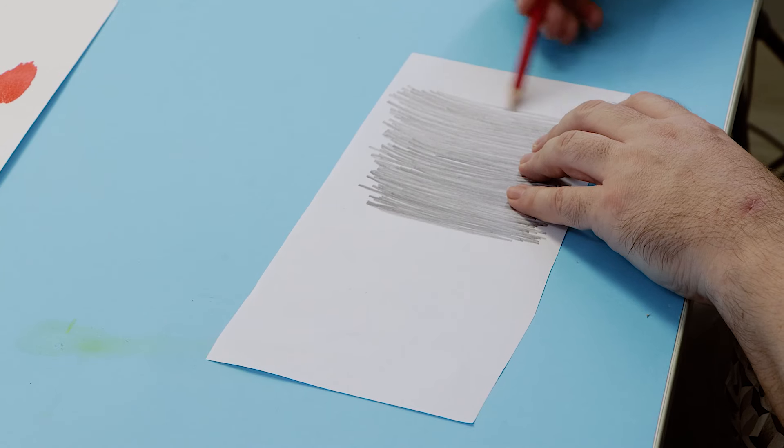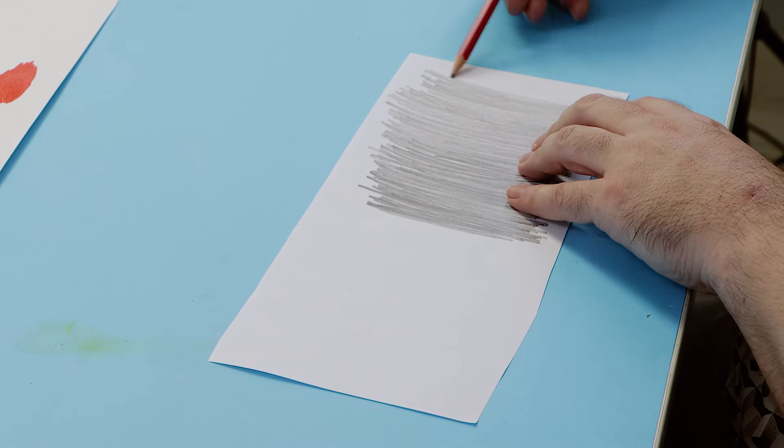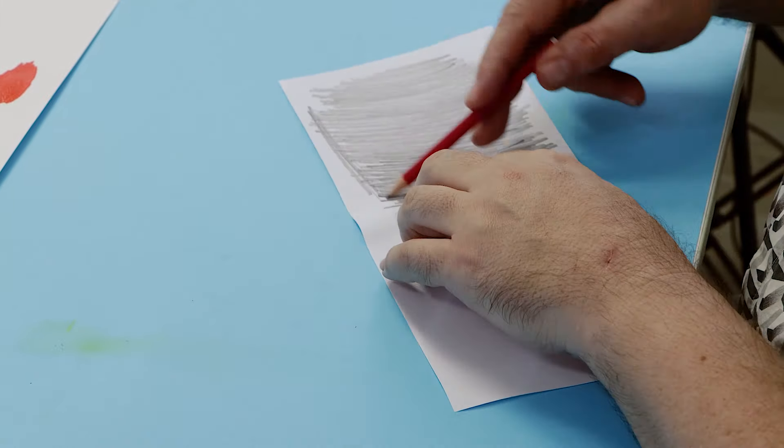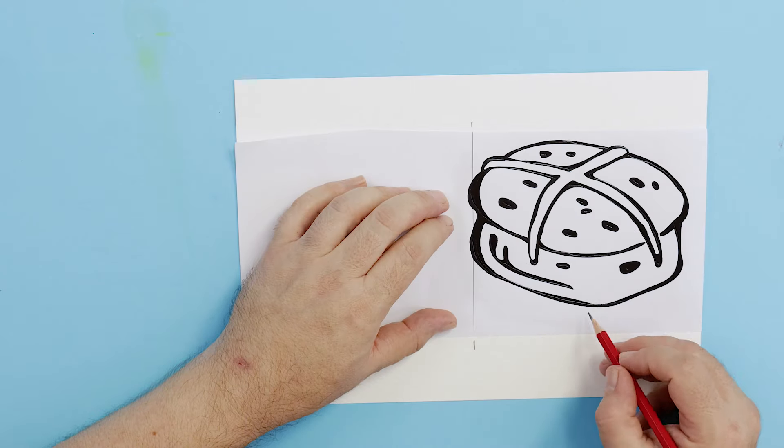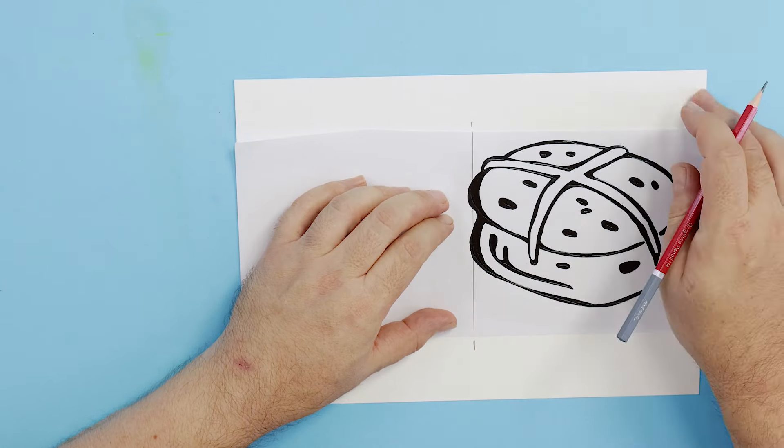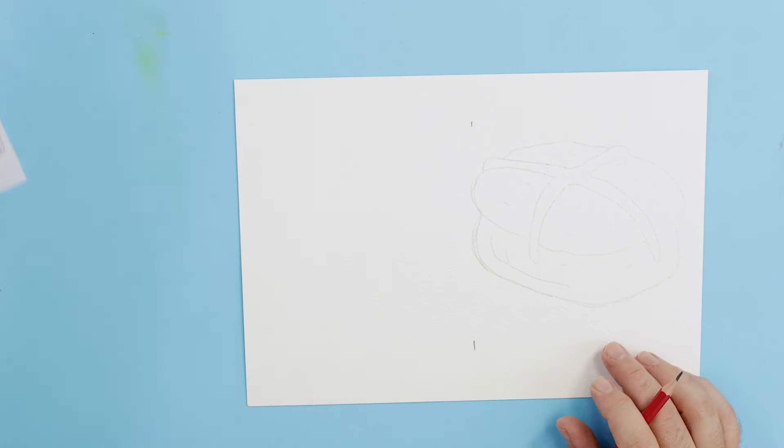The third card is a hot cross bun. Using the same process as with the others, shade the back side, flip it over and place it shaded side down into position. Draw in the fold marks then retrace the bun. Remove the sheet and redraw in the detail on the bun.